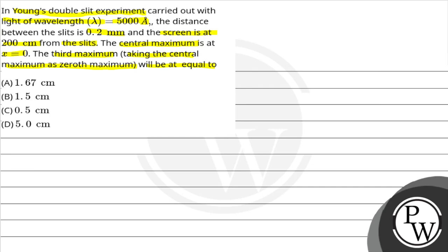In this question, we performed a Young's double slit experiment with wavelength of 5000 Angstrom, the distance between the slit is 0.2 mm, and the distance between the screen and the slit is 200 cm. The central maximum is at x equals 0, so what is the position of the third maximum?